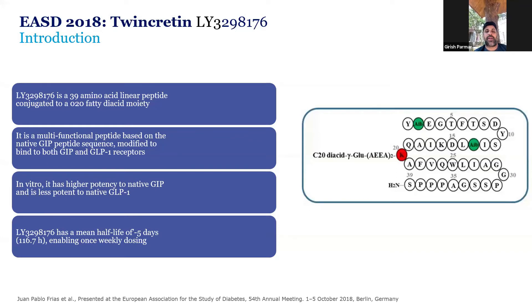This is LY3298176, a molecule from Lilly, also called as GLP-GIP, which is capable of stimulating the GLP-1 and GIP receptors. It is a 39 amino acid linear peptide conjugated to a fatty acid moiety to prolong its half-life. It is a multifunctional peptide based on native GIP peptide modified to bind to the GIP and GLP-1 receptors. It has a half-life of about 5 days enabling once weekly dosing.